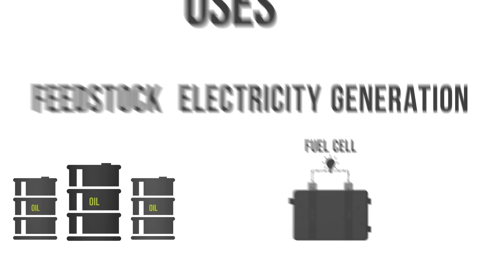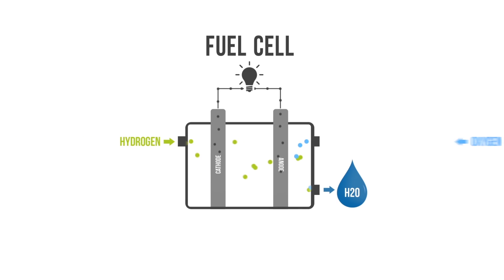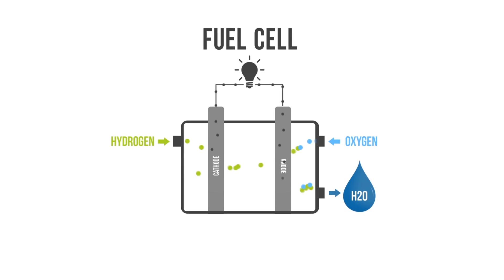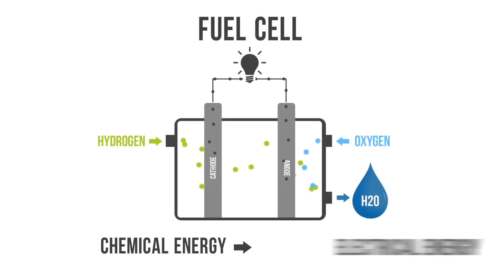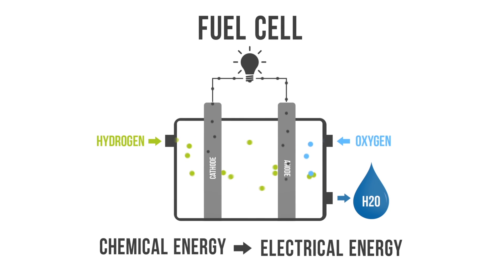Hydrogen can also be used for electricity production through a fuel cell. A fuel cell is an electrochemical cell which produces electricity by converting chemical energy into electrical energy. When hydrogen is combined with oxygen in a fuel cell, it produces heat and electricity, with only water vapor as a byproduct.